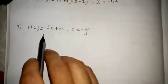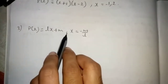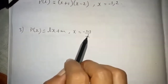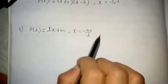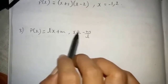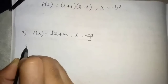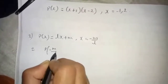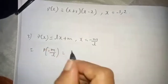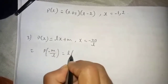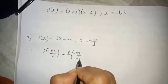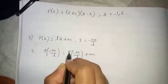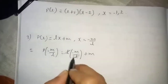Third question. p(x) equals lx plus m, where x equals minus m by l. So you have to check whether this x is a zero of this polynomial. We will substitute x here. p of minus m by l equals l times (minus m by l) plus m. Then we can cancel l and l.